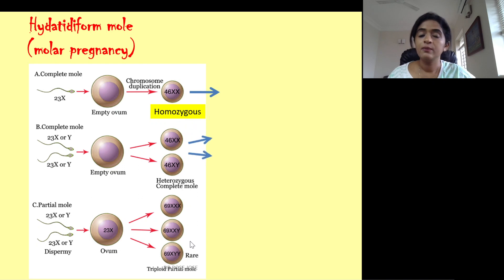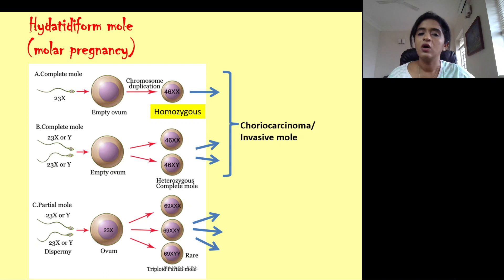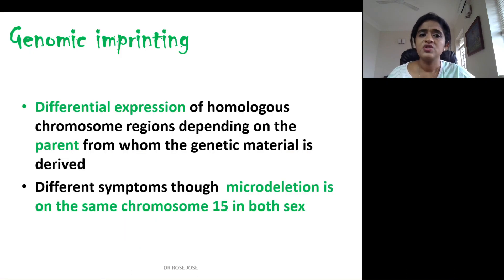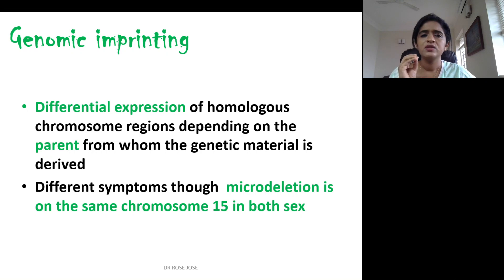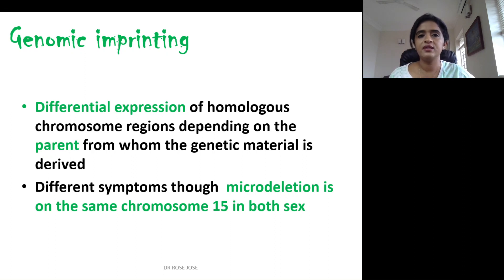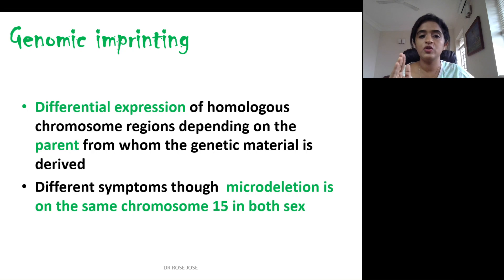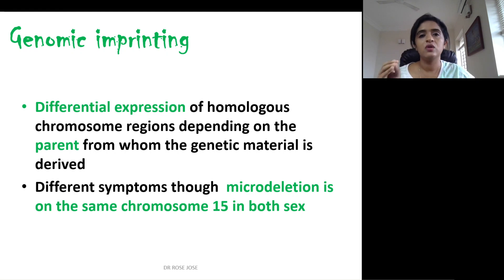Complete mole can result in choriocarcinoma or invasive mole. There is also the concept of genomic imprinting — a differential expression of homologous chromosome regions depending upon the parent from whom the genetic material is derived. For example, a microdeletion on chromosome 15 will present with different clinical conditions in the child depending on whether the deletion is inherited from the father or from the mother.